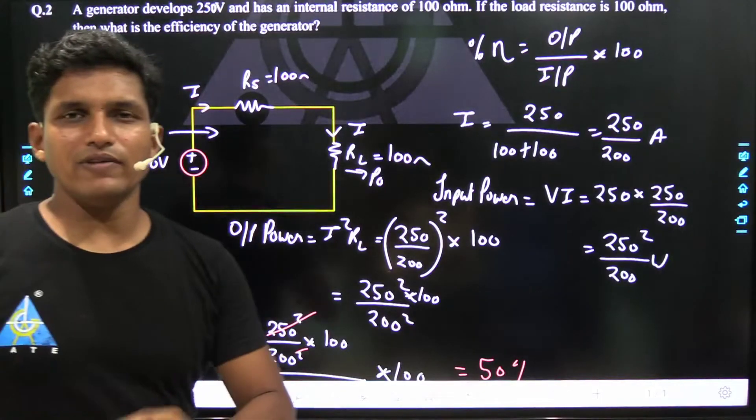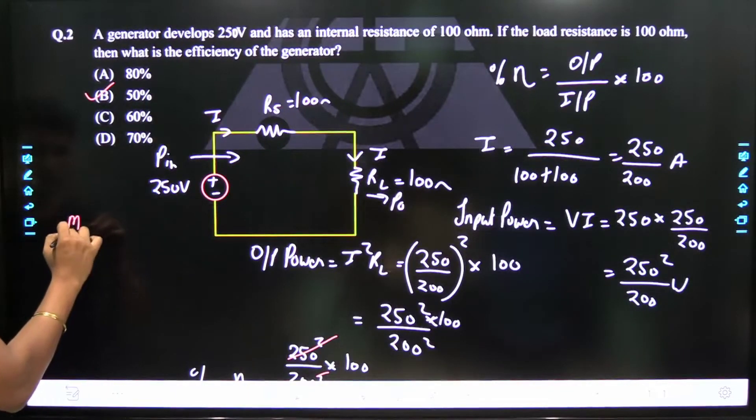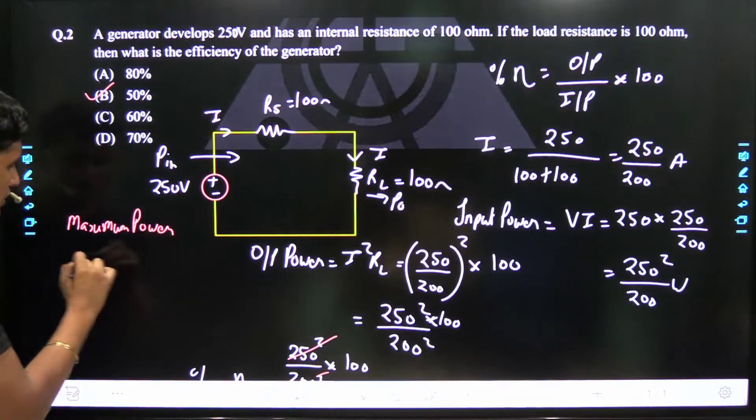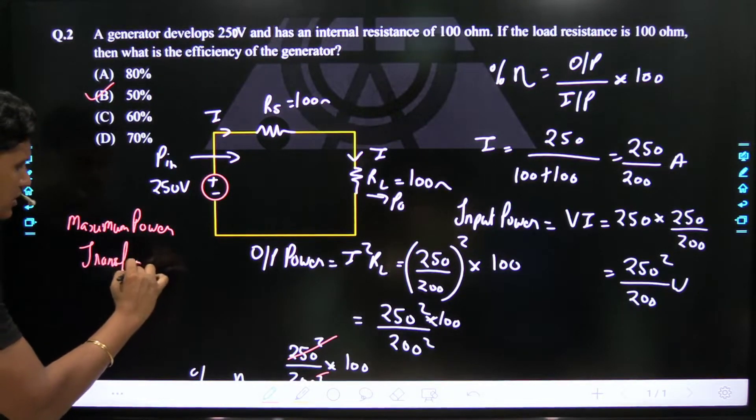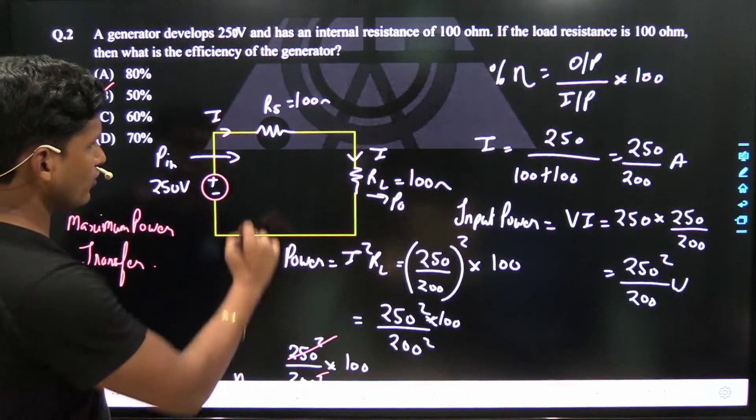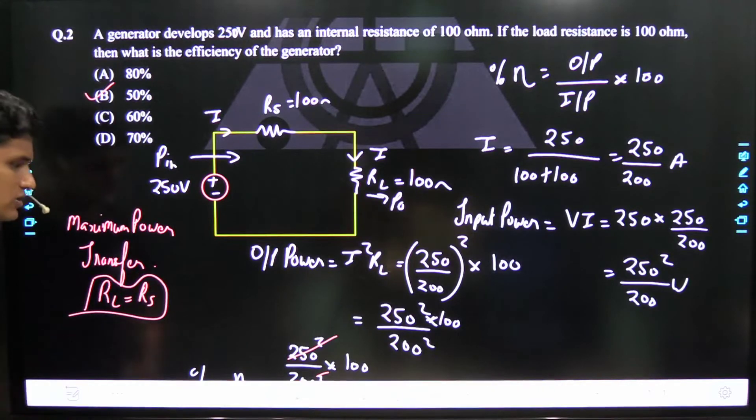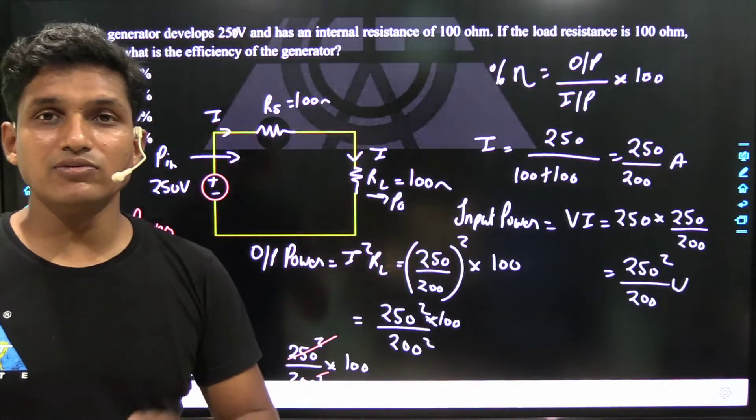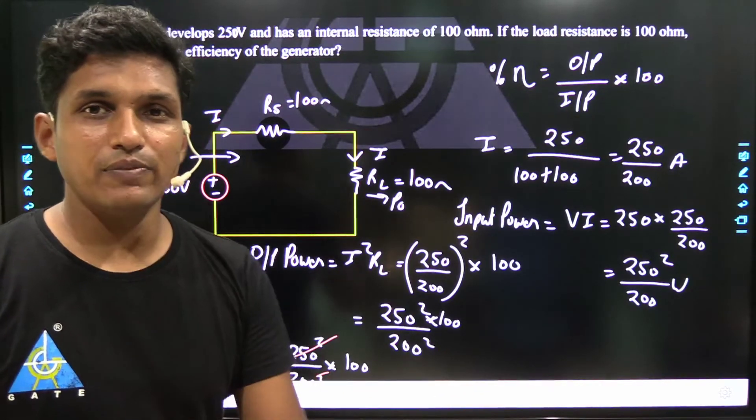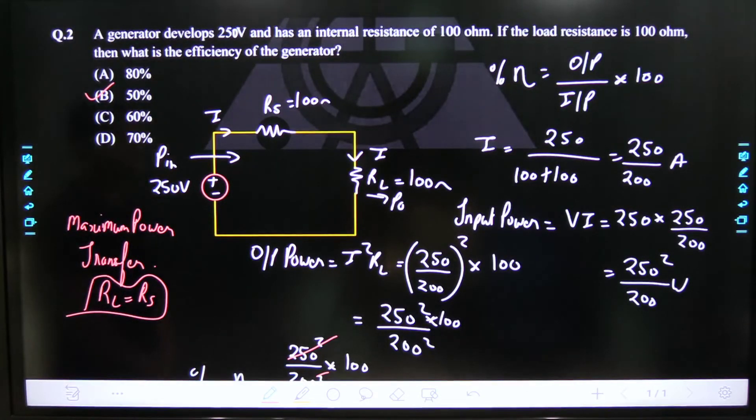Actually, this question didn't require so much calculation. It's a simple concept - this is a maximum power transfer question. Maximum power transfer happens under the condition where the efficiency is 50 percent. So directly we can find the answer, that is 50 percent. So answer is 50 percent, that is option B.